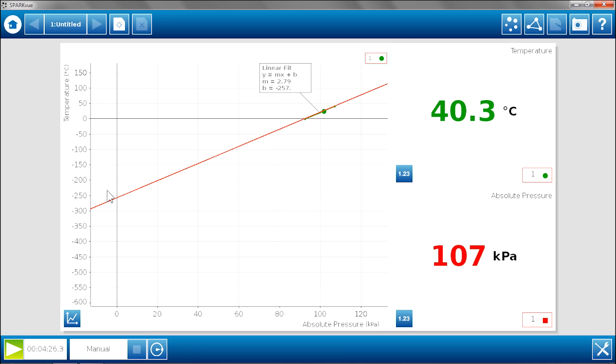And in this case, with our measurements today, that is negative 257. And we know it is supposed to be negative 273. But in the four minutes of data collection, we have got a very good relationship between pressure and temperature, and we are able to show the ideas behind the concept of absolute zero.